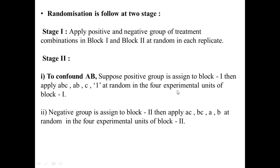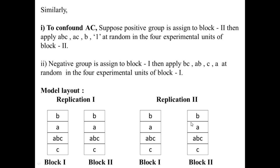In this 2³ factorial experiment we divide replicate 1 into two blocks, each with four experimental units. The positive group is assigned to block 1 and the negative group to block 2, where treatment combinations AC, BC, A, and B are applied at random. Similarly, in replicate 2 we confound the AC interaction effect. Suppose the positive group is assigned to block 2; then ABC, AC, B, and 1 are applied at random to the four experimental units of block 2.